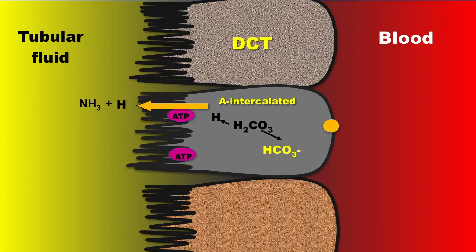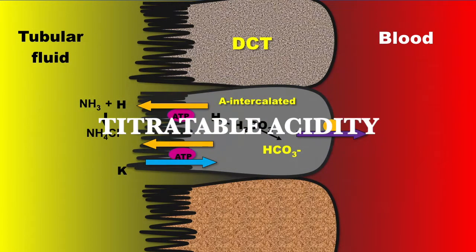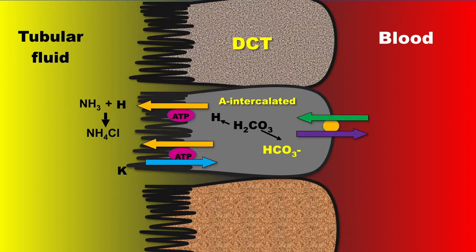As long as there is excess bicarbonate in the tubular fluid, most of the secreted hydrogen combines with bicarbonate. However, once all the bicarbonate has been reabsorbed, any excess hydrogen can combine with phosphate. This defines titratable acidity, representing the hydrogen ion buffered by phosphate. The system here is not just a mere replacement of filtered bicarbonate, but represents a generation of new bicarbonate ion.